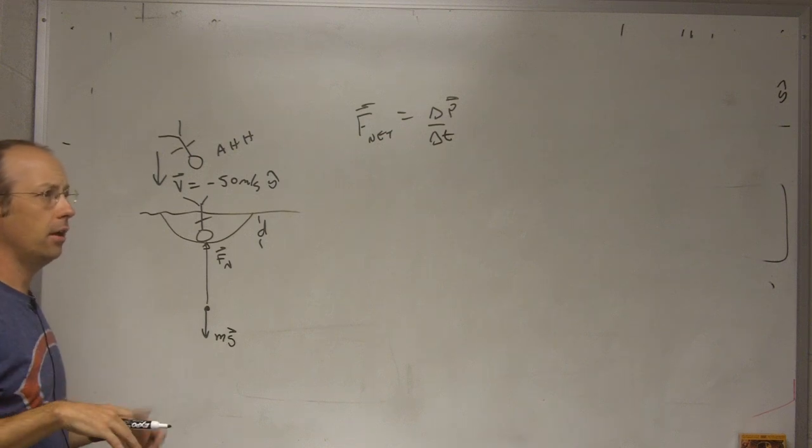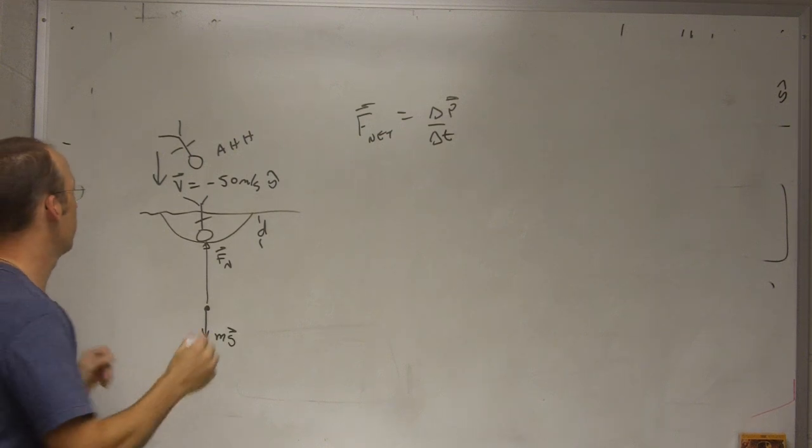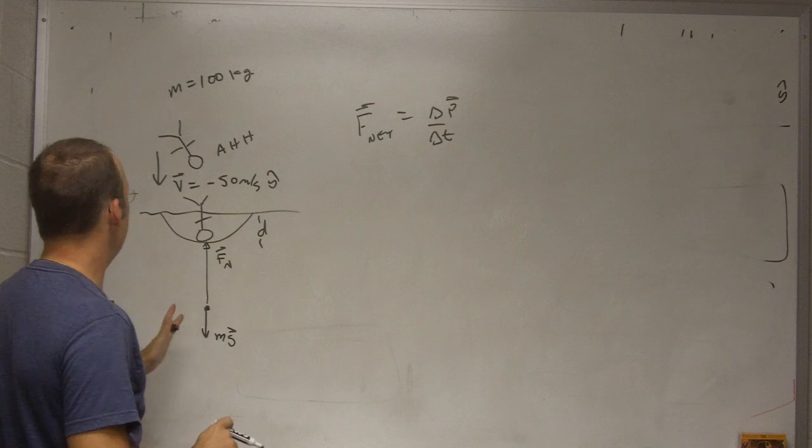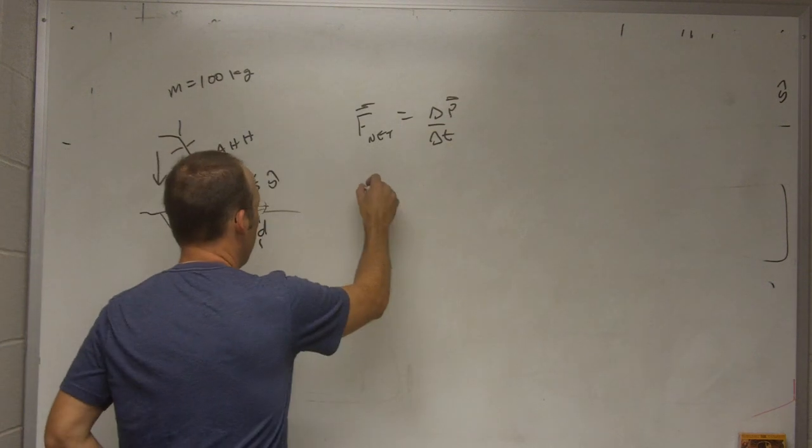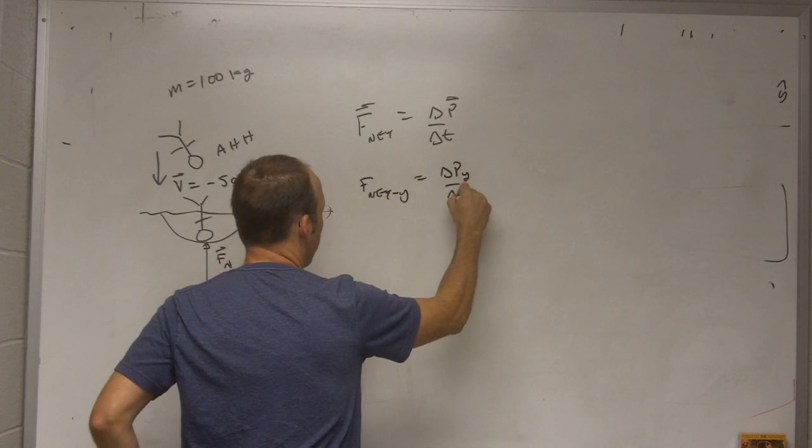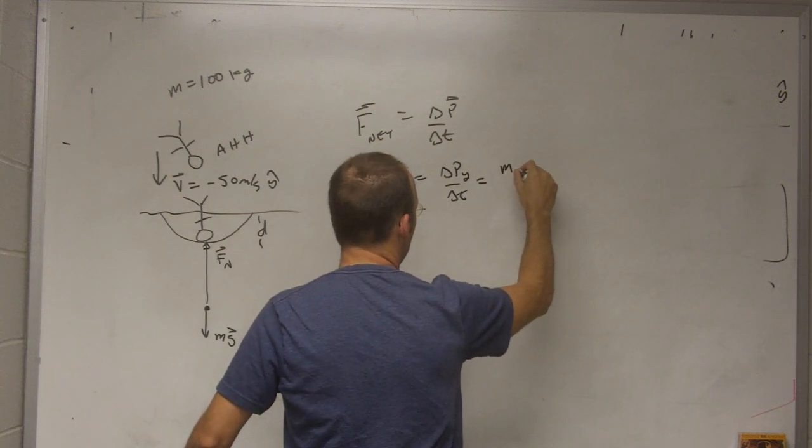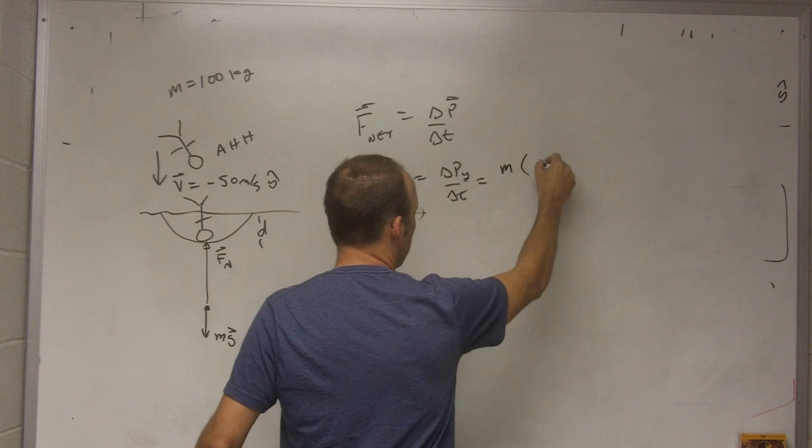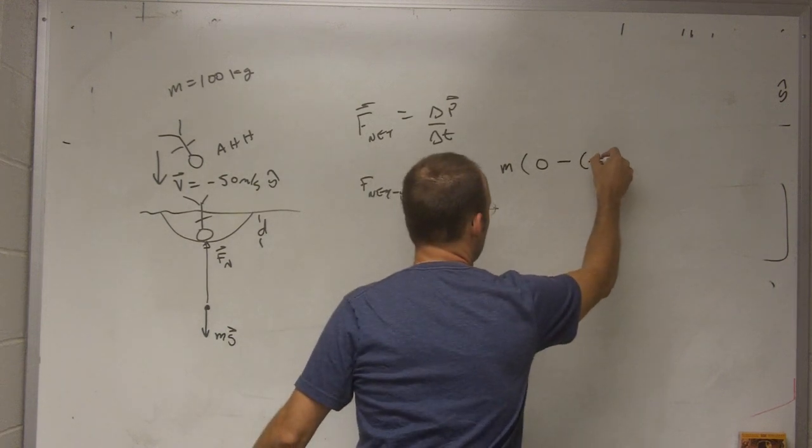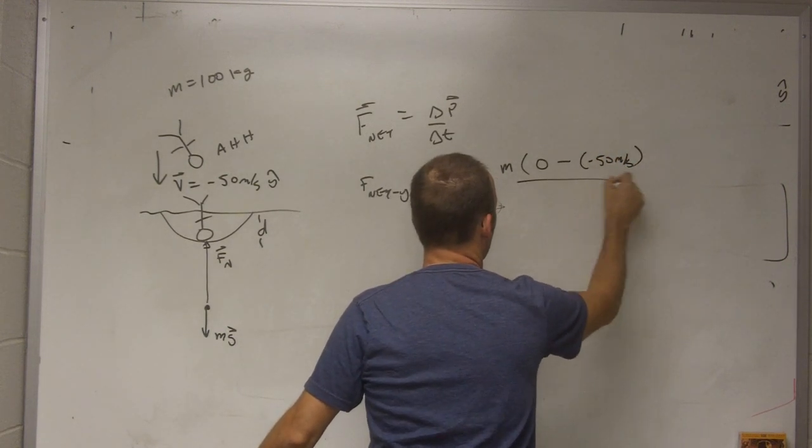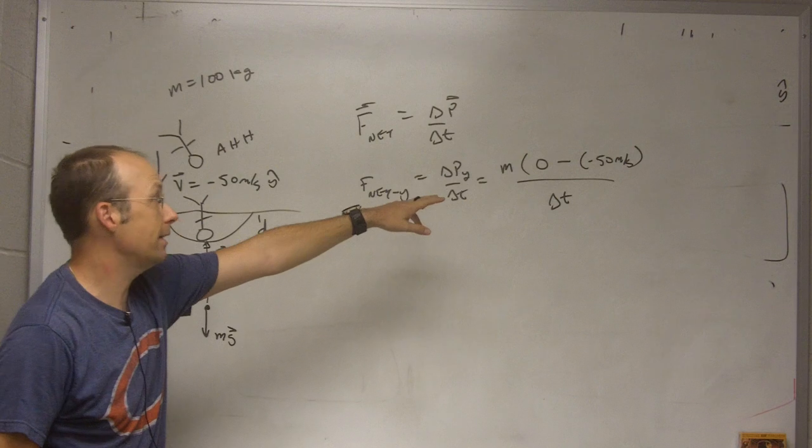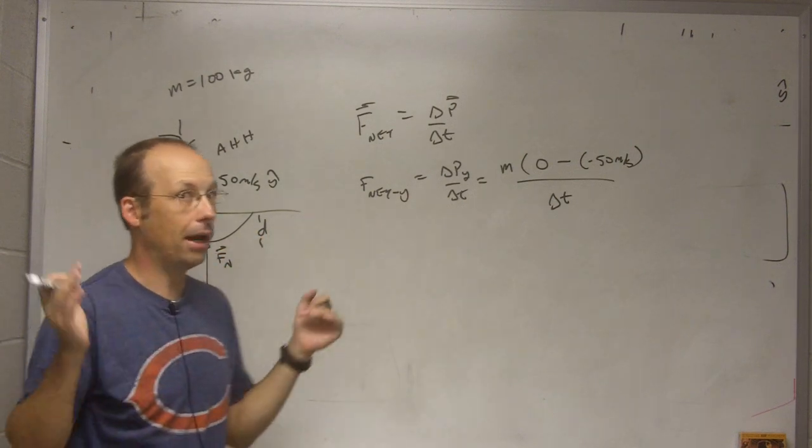So I am just dealing with a one dimensional problem here. So I could say Fnet y is delta P y over delta T equals M times the final velocity in the y direction is zero minus the initial velocity in the y direction which is negative 50. So I get that, that is going to be positive 50 over delta T. And again we get the same problem. But I just don't know time.